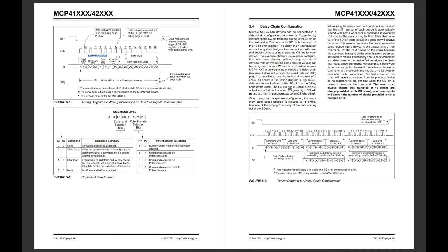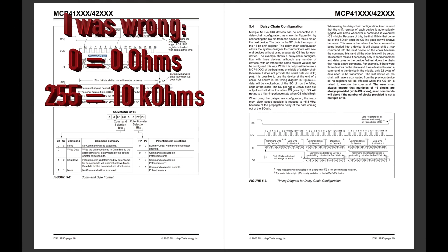After the command byte, immediately the data byte is sent on the MOSI channel - just a value from 0 to 255 that sets the potentiometer value. The one I'm using in the MCP42010 is a 10 kilohm maximum potentiometer, so sending 0 gives 10k ohms and sending 255 gives 0 ohms - though I may need to verify that direction once I get into the source code.